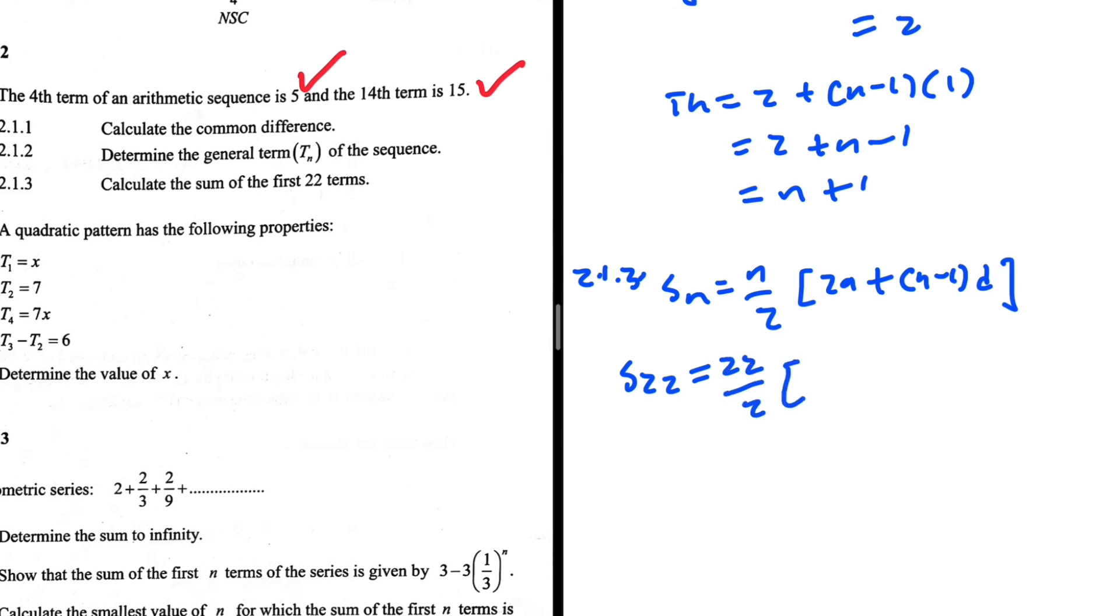So we're going to have 22 over 2 multiplied by 2a is 2 also, plus n minus 1, and it's 22, so 22 minus 1 multiplied by d. Without trying to act fancy, let me just substitute that in my calculator. So I have 22 divided by 2 multiplied by 2a, so that will be 4 plus 22 minus 1 multiplied by 1. I'm getting 275. So there we go, the sum of the first 22 terms is 275.